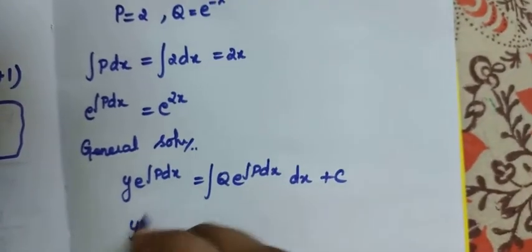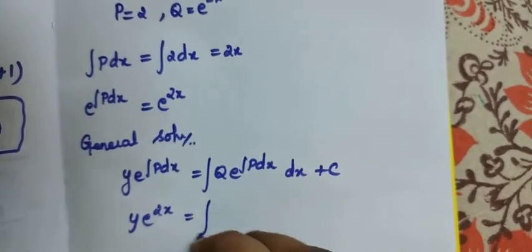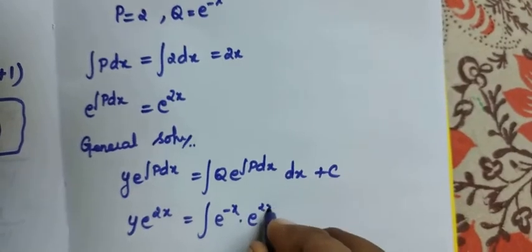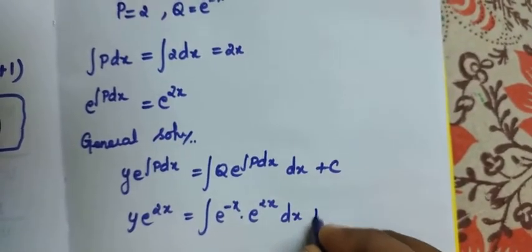So y·e^(∫p dx) is y·e^(2x). Our q is e^(-x), so we have e^(2x) dx + c.